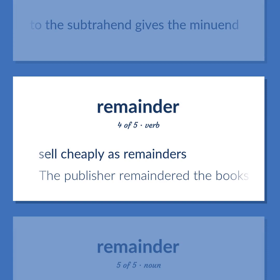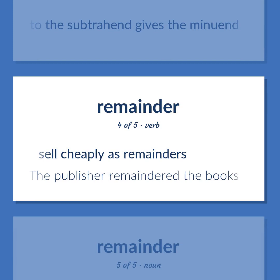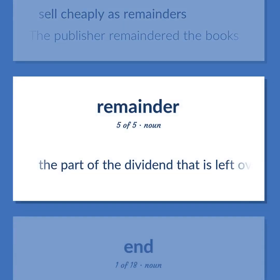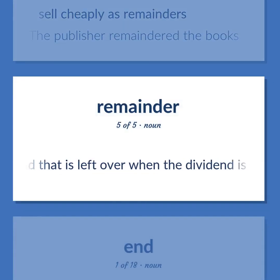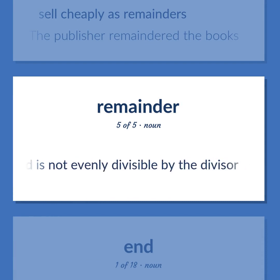The publisher remaindered the books. The part of the dividend that is left over when the dividend is not evenly divisible by the divisor.